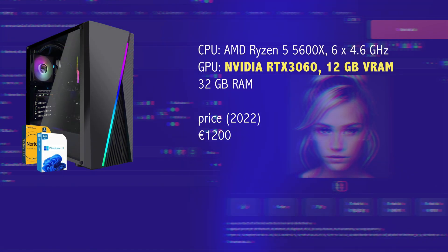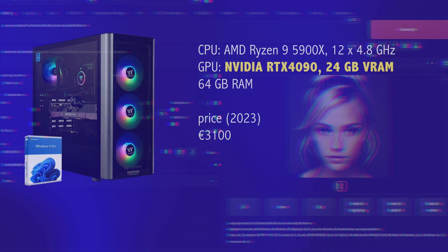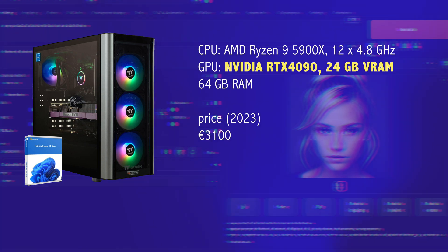Then we have a mid-range PC with an AMD Ryzen 5 and an Nvidia RTX 3060 with 12 GB of VRAM and 32 GB of RAM, which costs about 1000 Euro or less. Then there's my new high-end PC with a Ryzen 9 and an RTX 4090 with 24 GB of VRAM and 64 GB of RAM, which comes at a price of over 3000 Euro.